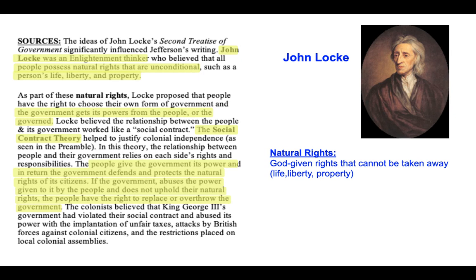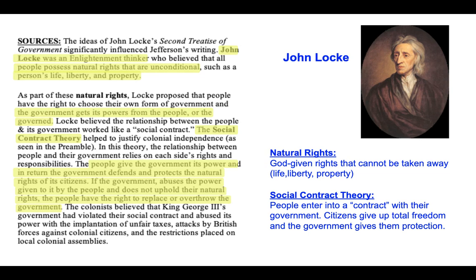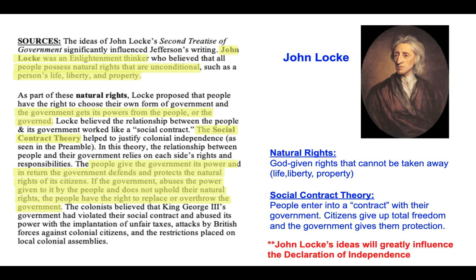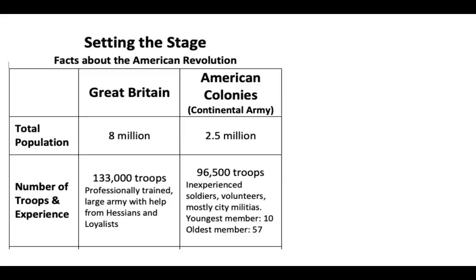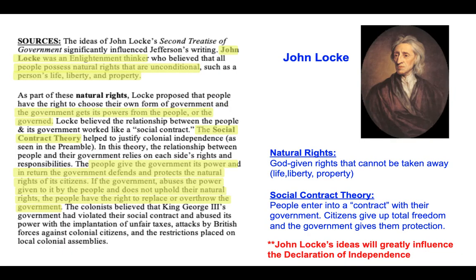Type this into the side of your notes: Natural rights are God-given rights that cannot be taken away — life, liberty, and property according to John Locke; Thomas Jefferson changes that to life, liberty, and the pursuit of happiness. Social contract theory: people enter into a contract with their government; citizens give up total freedom and the government gives them protection; when the government fails to give those protections, the people have the right to overthrow that government. Also note that John Locke's ideas greatly influenced the Declaration of Independence.